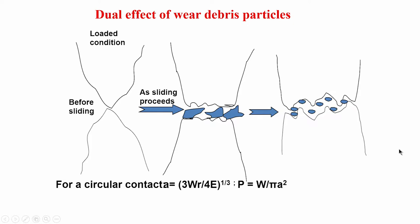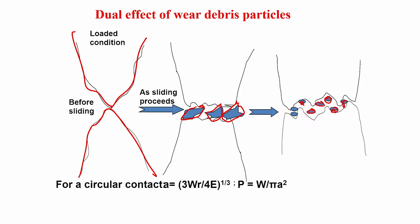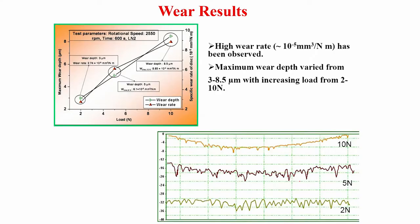This schematic cartoon shows that at high sliding speed there is wear debris formation from both the flat and ball asperities. This wear debris can be crushed further into smaller particles trapped between the two mating bodies. This takes place under pressure — the contact pressure p equals W divided by π r².